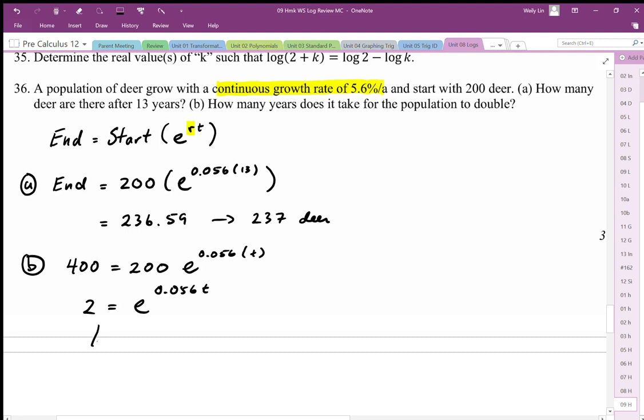So we get log 2 equals 0.056 t. The time works out to be log 2 over 0.056. Punching that into my calculator...